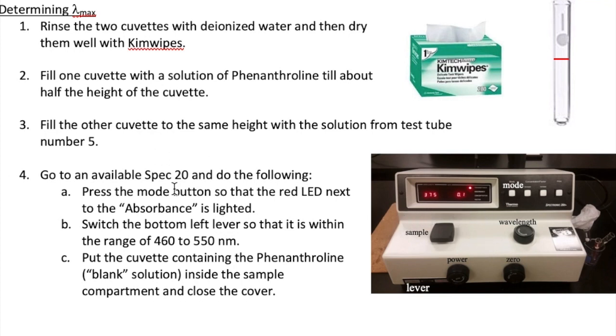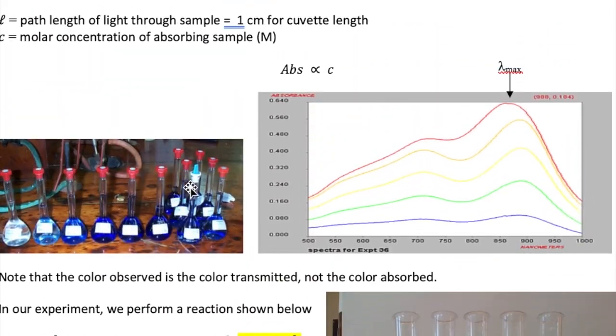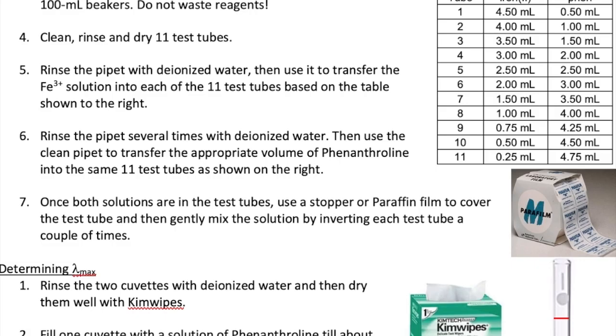Basically, what you're doing is creating one of the plots that looks like this, except that you're going to do it manually. You're going to measure the absorbance of solution number 5 at one wavelength, and then you're going to move on to another wavelength and another wavelength and so on, until you find the wavelength that gives you the maximum absorbance.